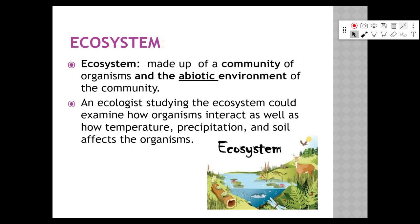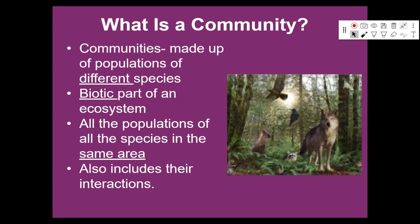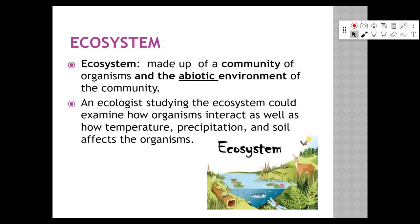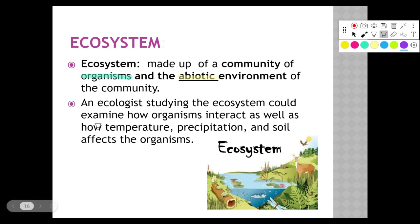An ecosystem is made up of a community of organisms and the abiotic environment of that community. A community is all the living things — different species in one area. An ecosystem adds the abiotic, non-living components. An ecologist studying an ecosystem examines how organisms interact as well as how temperature, precipitation, and soil affect those organisms. Temperature, precipitation, and soil are all abiotic — non-living — factors coexisting with living organisms.